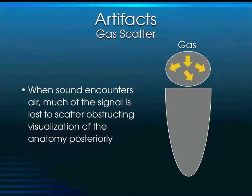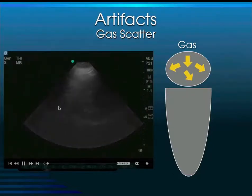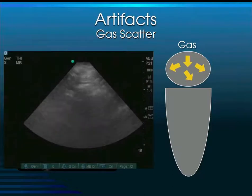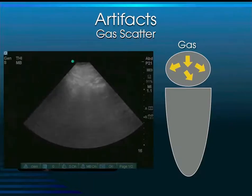Gas is the true enemy of ultrasound. When sound encounters gas it gets scattered everywhere, and you lose the ability to process the image and make any meaningful interpretation. When you encounter an image you can't make sense of, the answer is usually bowel gas. This happens a lot when scanning the aorta — the solution is to push the probe with more force to displace loops of bowel and get around them.